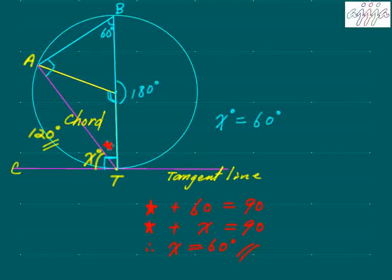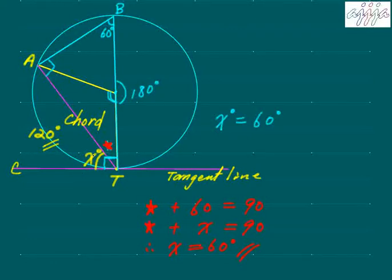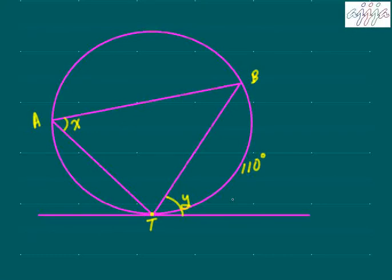As you can see, star plus 60 equals 90, and star plus x also equals 90, so x and 60 are the same. Therefore, this tangent-chord angle equals half of the central angle. Very simple.